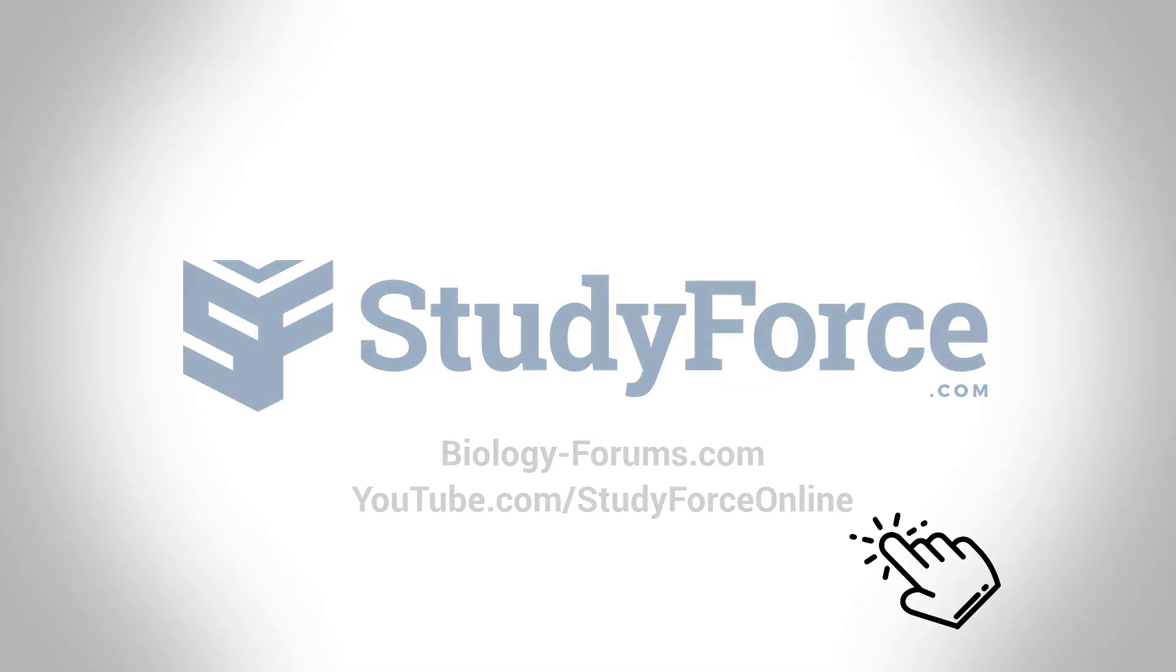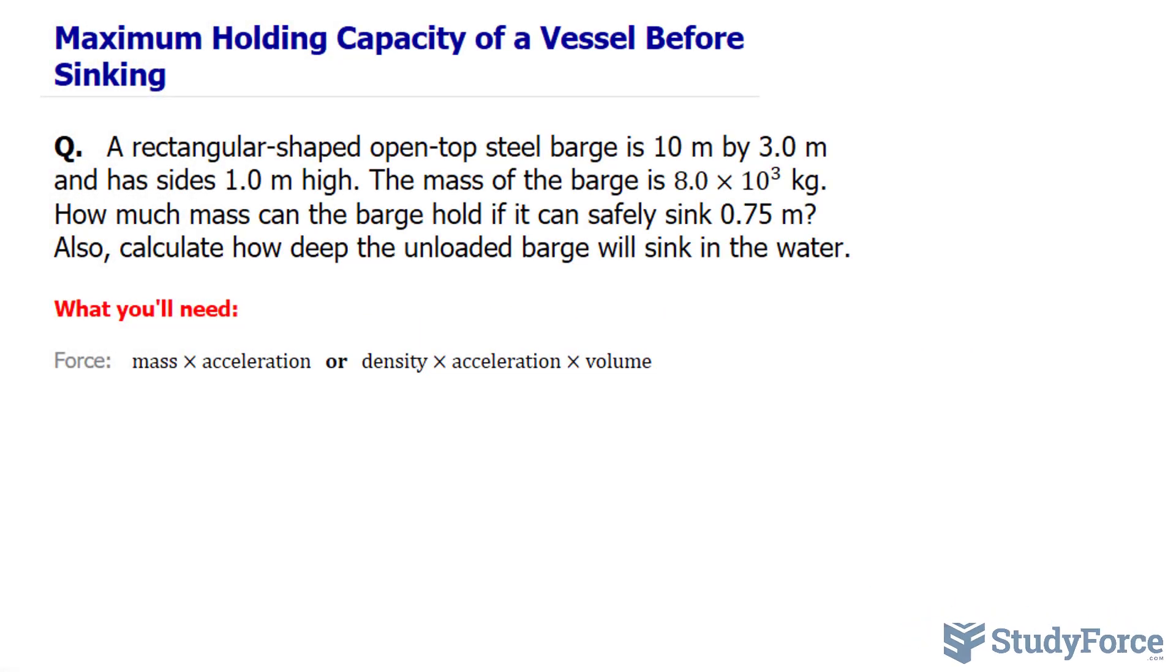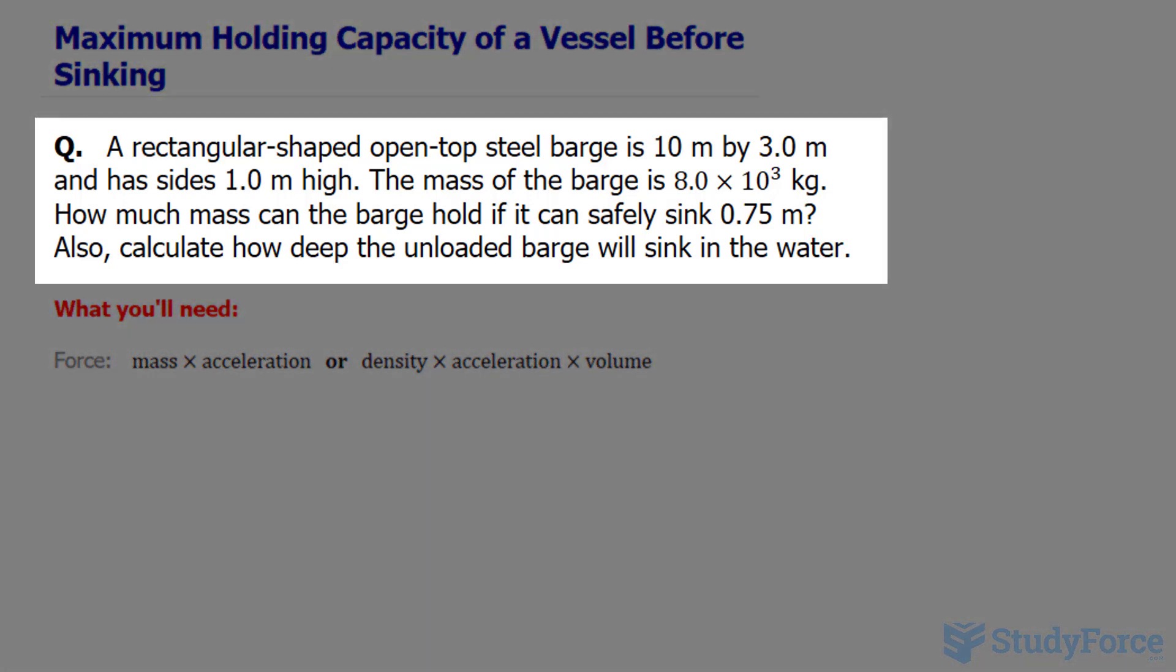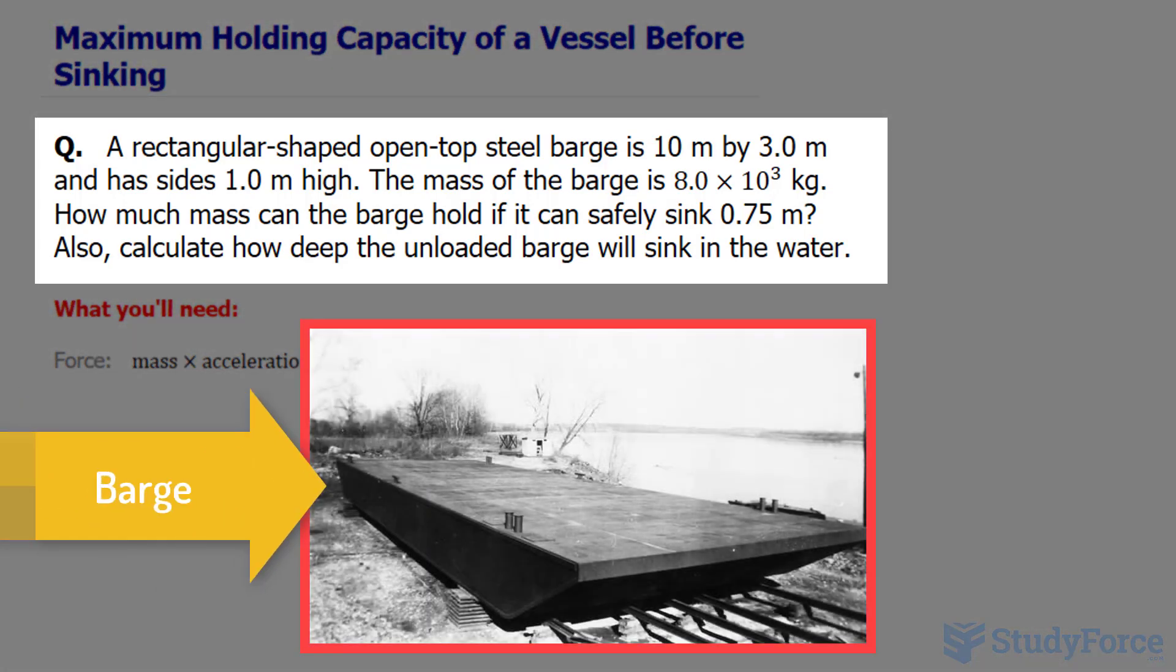In this lesson we'll look at how to calculate the maximum holding capacity of a vessel before it sinks. The question reads, a rectangular shaped open top steel barge is 10 meters by 3 meters and has sides 1 meter high.